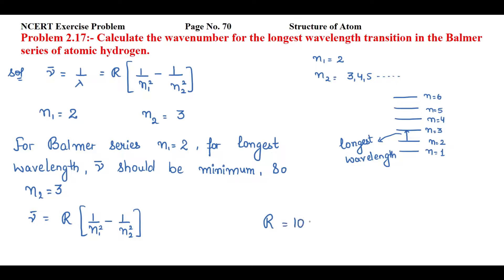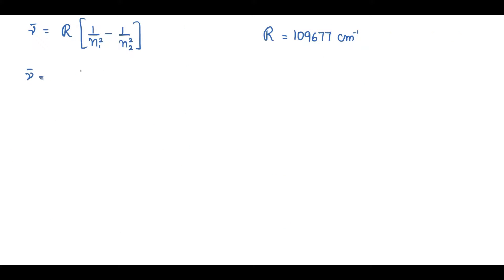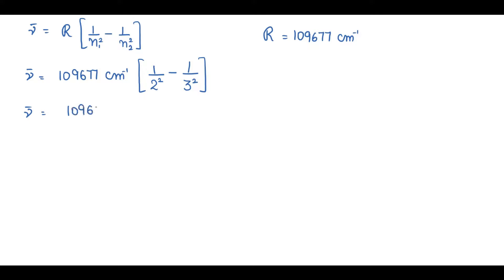The value of Rydberg's constant R is 109,677 cm⁻¹. Substituting the values: nu bar = 109,677 cm⁻¹ × (1/2² − 1/3²), which gives nu bar = 109,677 cm⁻¹ × (1/4 − 1/9).